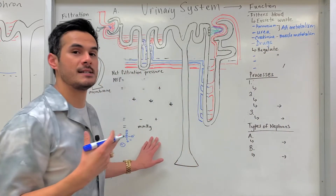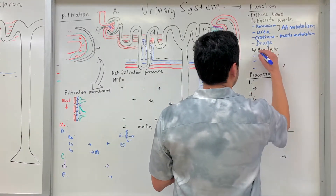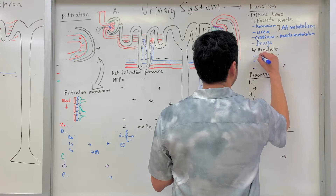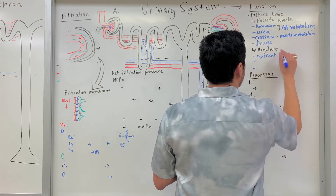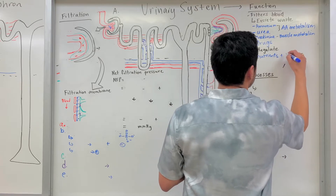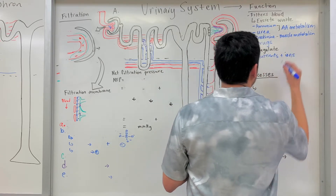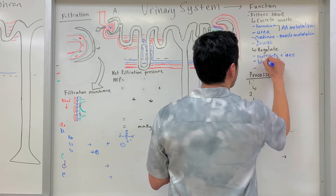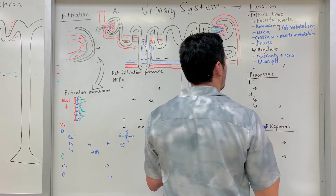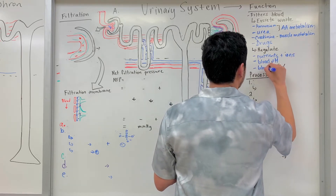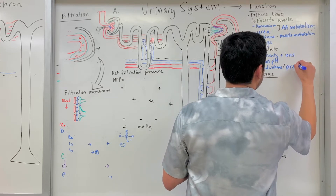So what are the things that we're helping to regulate? We're trying to regulate nutrients as well as ions, including blood pH, as well as blood volume or blood pressure.